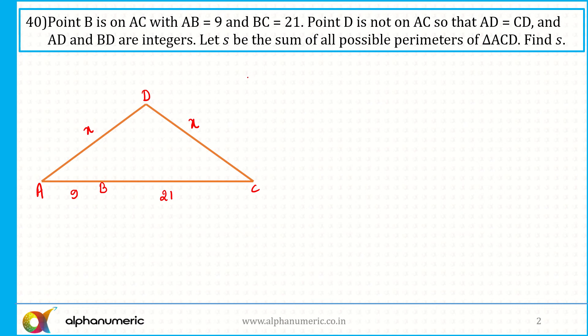I need to find all possible perimeters of triangle ACD. BC equals 21 and AB equals 9, so point B is given for a reason. Also, AD and BD are integers — so join B to D. The length BD is also an integer. Let's mark BD equal to Y.